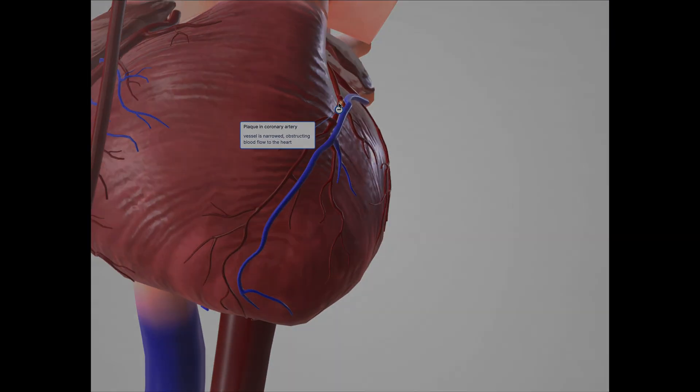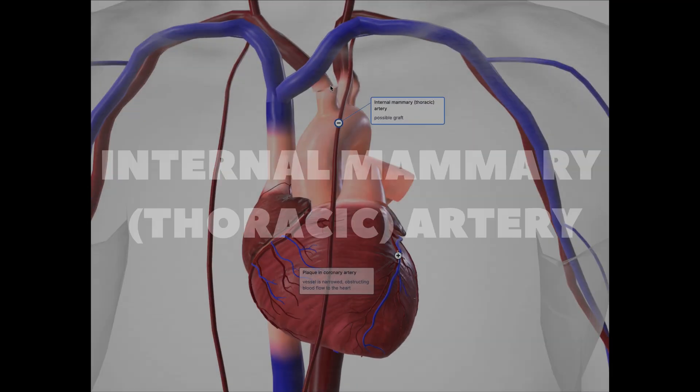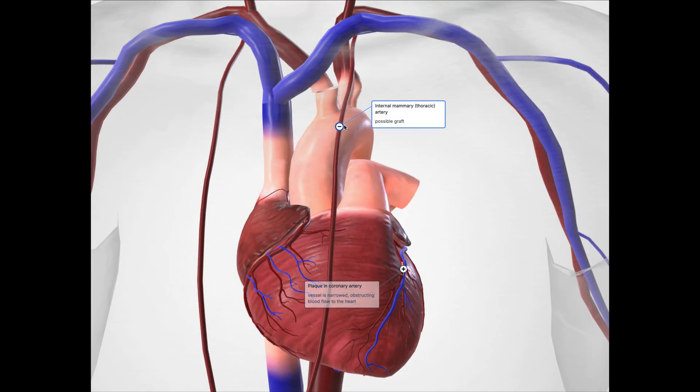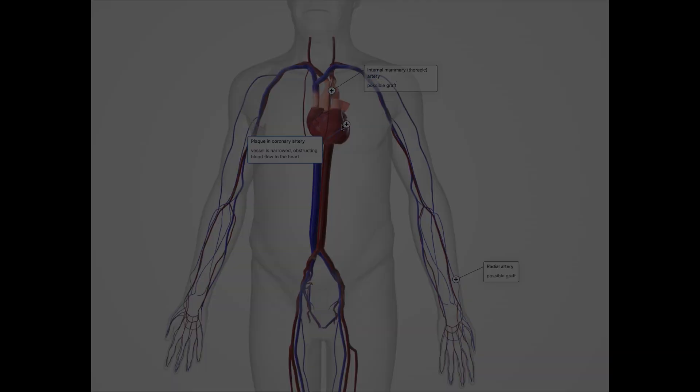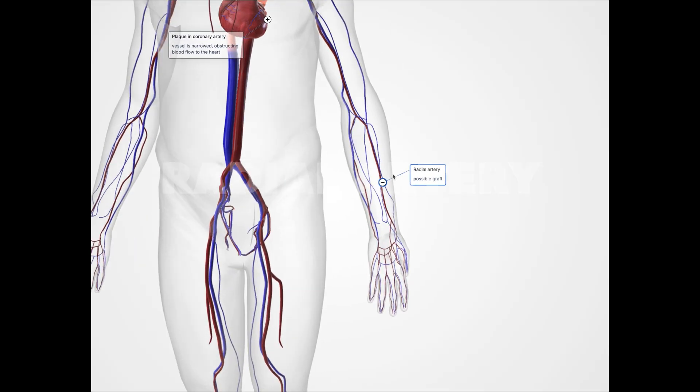The most common graft choices are the internal mammary, or thoracic artery, the saphenous vein, and the radial artery.